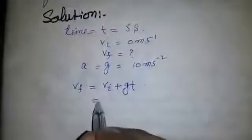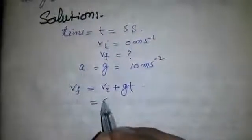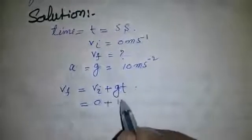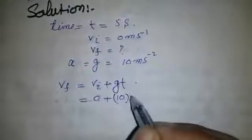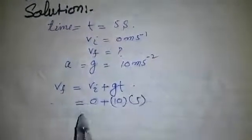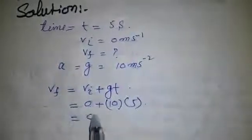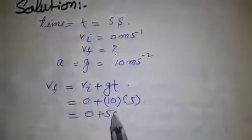vf equals 0 plus 10 times 5, which equals 50 meters per second.